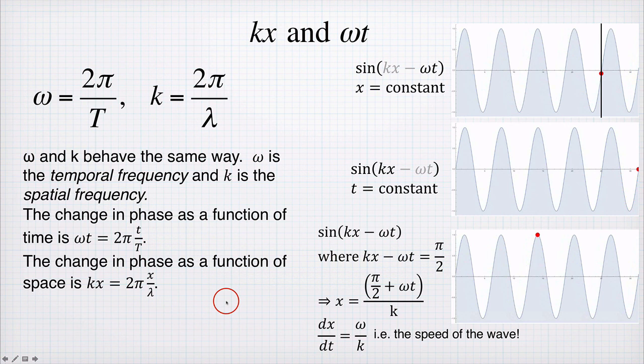So I hope this helps clarify what the purpose of omega and k is and how we use it to understand how a wave is moving. And how we understand what a wave does in space and in time in terms of its spatial frequency and its temporal frequency.